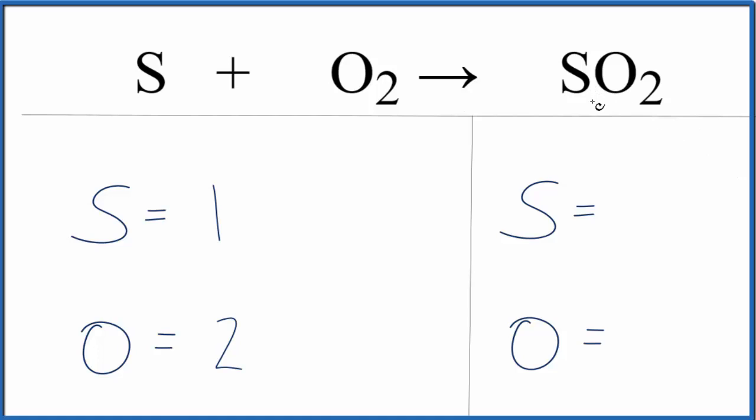Over on the product side, we have the one sulfur and then the two oxygens.